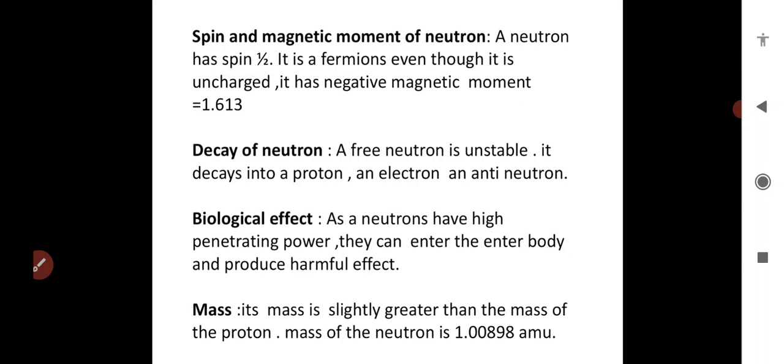We all know that mass of proton and neutron is almost equal to 1.627 into 10 power minus 27 kg. In terms of atomic mass per unit, it is 1.00898 atomic mass per unit.